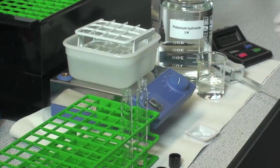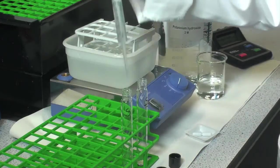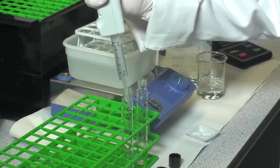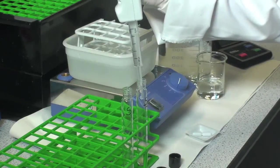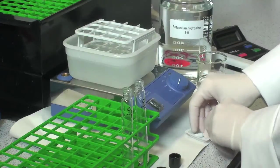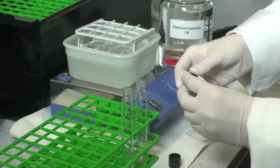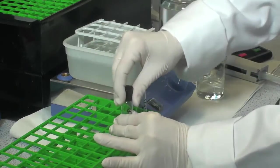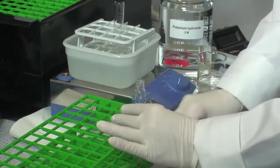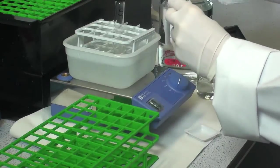Add 0.4 mL of 2 molar potassium hydroxide to each of the test tubes. Then add a 5 by 15 millimeter stirring bar to each. Cap the tubes and stir the contents for 30 minutes in an ice water bath over a magnetic stirrer.